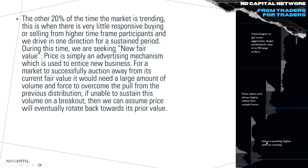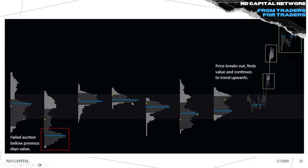Looking at this screenshot: value is pushing higher without overlap — this value area is not similar to the previous one — and price opens and drives high within the first couple of hours. You can see the initial balance, then the trend gets more aggressive as larger participants step in to fill large orders. Here's a nice screenshot showing a third auction below the previous day's value: a failed auction, then range-range-range, price breaks out, finds new value, continues trending upward — with single prints marking the imbalance.